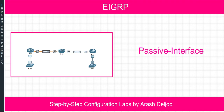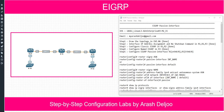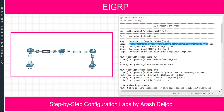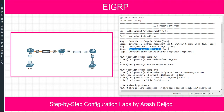I'll show you how to configure passive interface in both EIGRP classic configuration and EIGRP named configuration. The steps are: draw the topology, assign interface IP addresses and no shutdown, configure classic EIGRP on R1 and R2, configure named EIGRP on R3. All four steps are already done. Now we want to configure step five — EIGRP passive interface on R1 eth0/0 and R3 eth0/0.